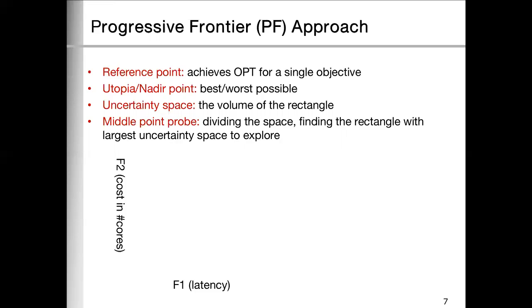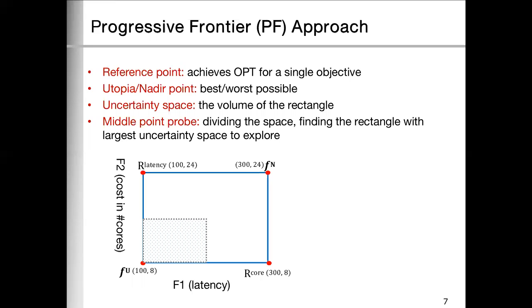Now we present them one by one. So first, in our example, we have the latency and the cost. So we find the two reference points. And then by these two reference points, we construct the Utopia and Nadir point. After that, we have the initial box.